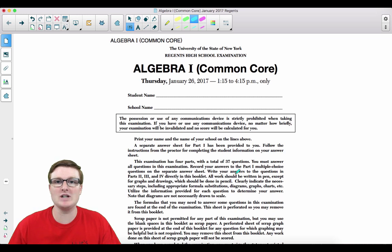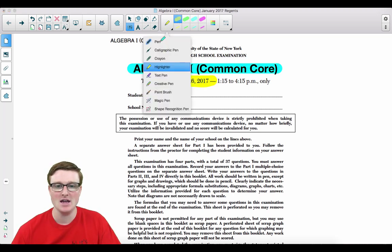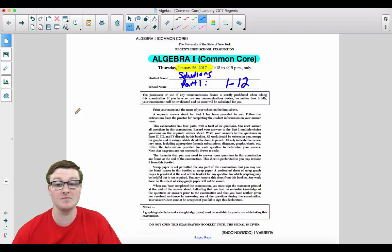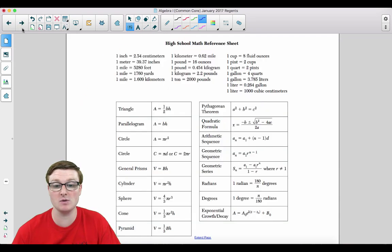Welcome Algebra 1 students to another Regents review video. This is the Algebra 1 Common Core January 2017 Regents exam. These are going to be the solutions for part one, questions one through twelve. This is the first half of the multiple choice section, and let's just talk about a few things first before we get started.